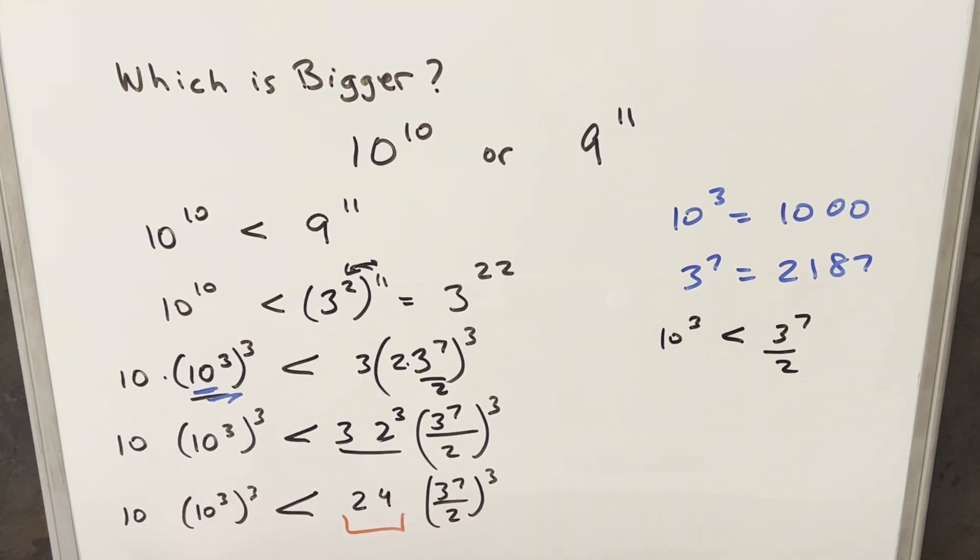But now we have it where 24 is definitely greater than 10, and this number, this number in here we decided was like 1090, and this is 1,000, so this number over here is definitely greater than 1,000 cubed, and so therefore we can say 9 to the 11 is greater than 10 to the 10.